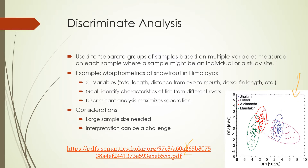Discriminant analysis is used a lot in morphological kinds of studies where you go out and measure a whole bunch of different variables on individual fish, for example, from different rivers or different lakes, to ask if there's evidence for consistent morphological differences among these groups. The focus is on finding separation among your groups, which makes it fairly different from PCA and factor analysis.